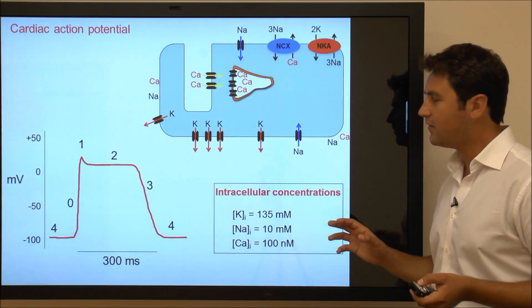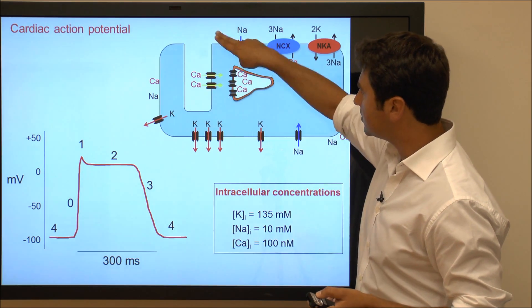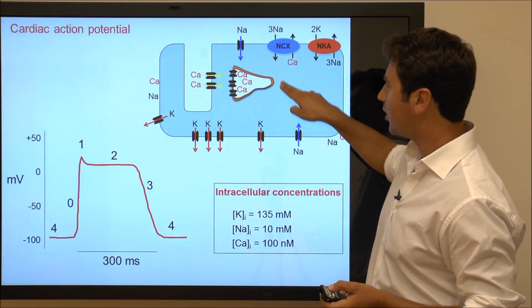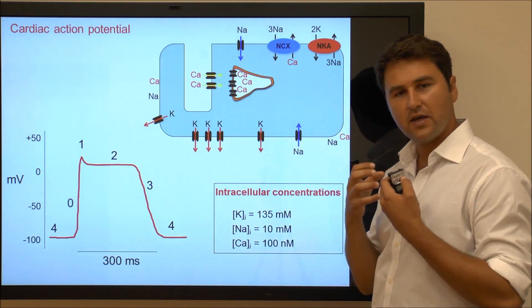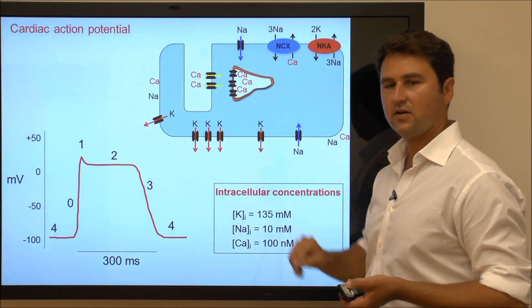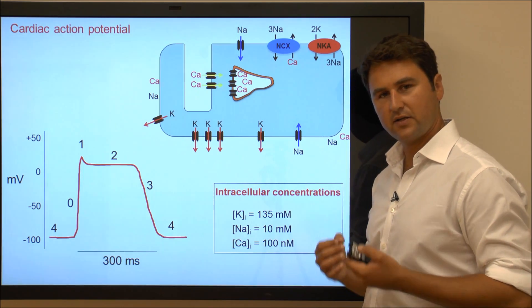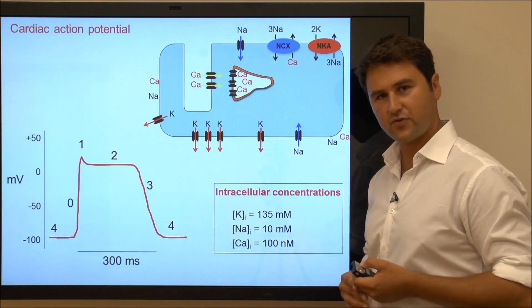So here we have a cardiac myocyte with the T-tubules being shown here, with the sarcoplasmic reticulum which are the endogenous calcium stores, and all the major ion transporters that regulate the cardiac action potential and the cardiac contraction.